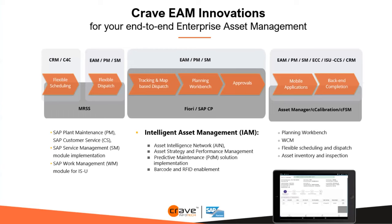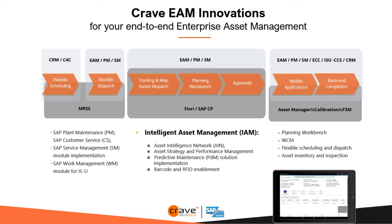Thank you very much, Shiva. To summarize: we took the example of wind turbines, but we also have processes and content already built for several other asset classes — transformer, conveyor belt, aircraft for aviation, and several others — a mix of utility, infrastructure, and aviation. We have templates already built that can be leveraged, because when SAP standard IAM does not come with content, you have to build it, and that's what we are investing time in. This is the end-to-end solution — a combination of standard SAP offering and Crave offering.